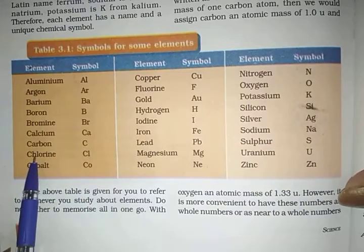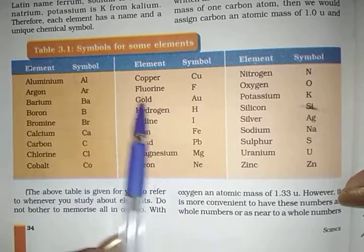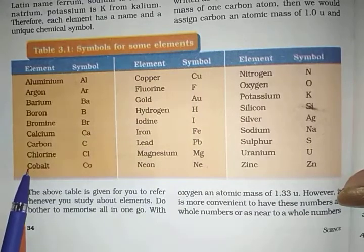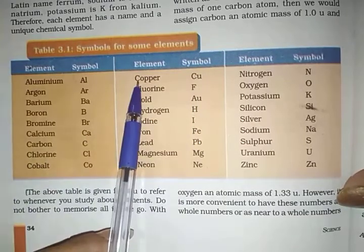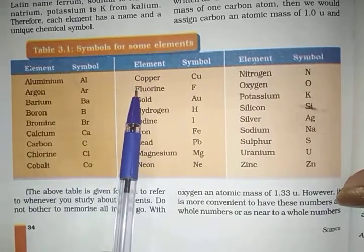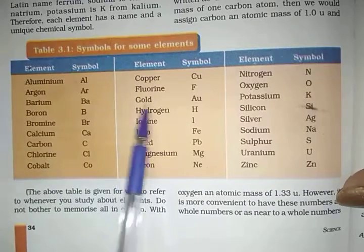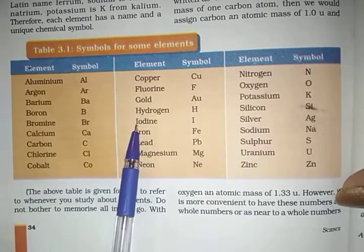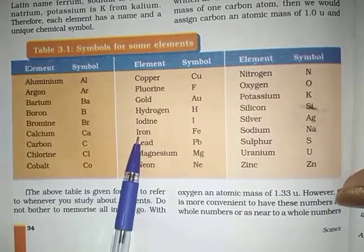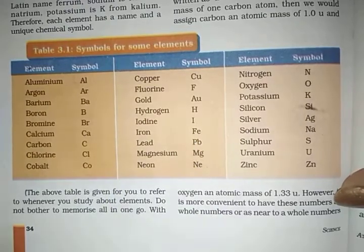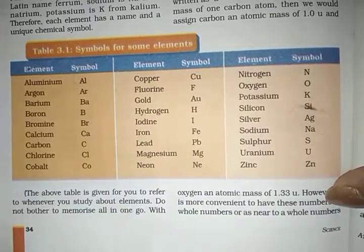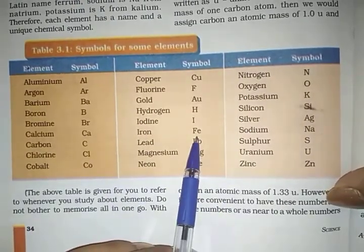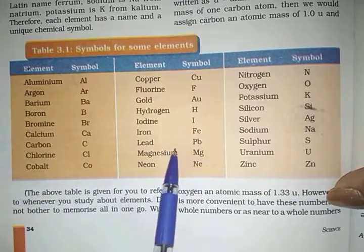Chlorine — Cl. Cobalt — Co. Copper — Cu, because both Cobalt and Copper start with Co. Fluorine — F. Gold — Au. Hydrogen — H. Iodine — I. Iron — Fe. Iron's symbol is Fe because the earlier name of iron was Ferrum.